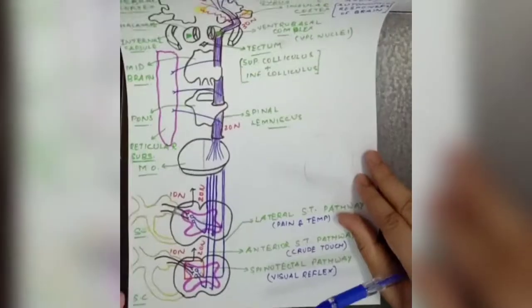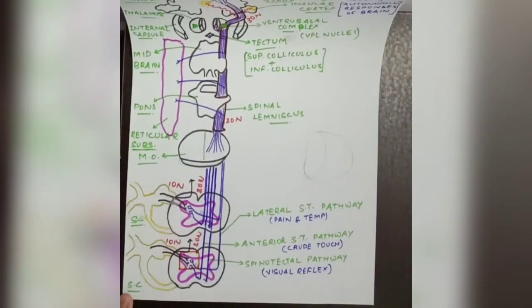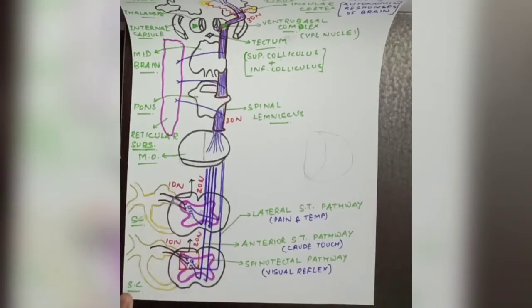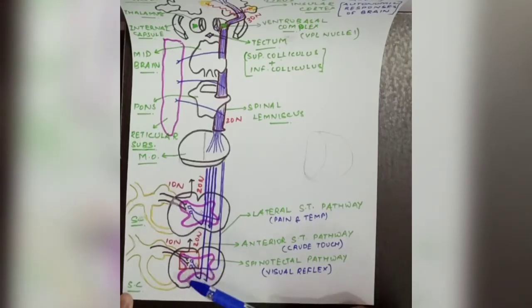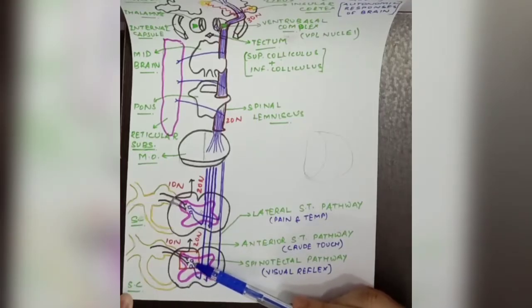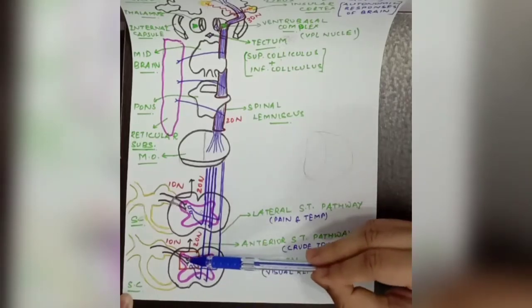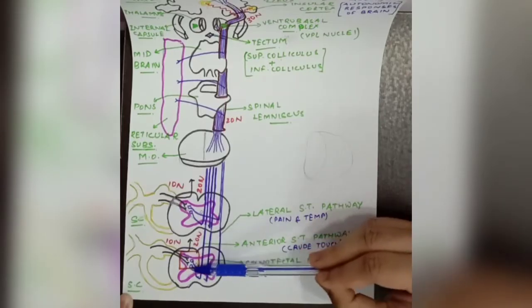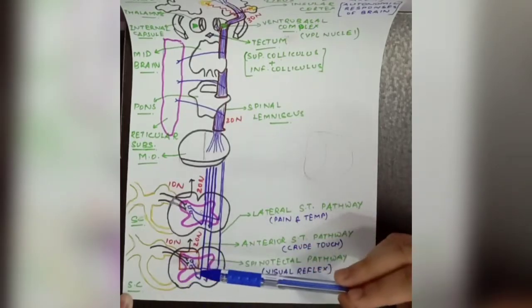We will now discuss this pathway in detail. At the spinal cord level, the first step is the spinal nerve entering the dorsal root, which divides into the medial branch and the lateral branch. The lateral branch terminates in the dorsal horn of the gray matter. This constitutes the first order neuron. The second order neuron begins at this point of termination, in a region called the Substantia Gelatinosa.